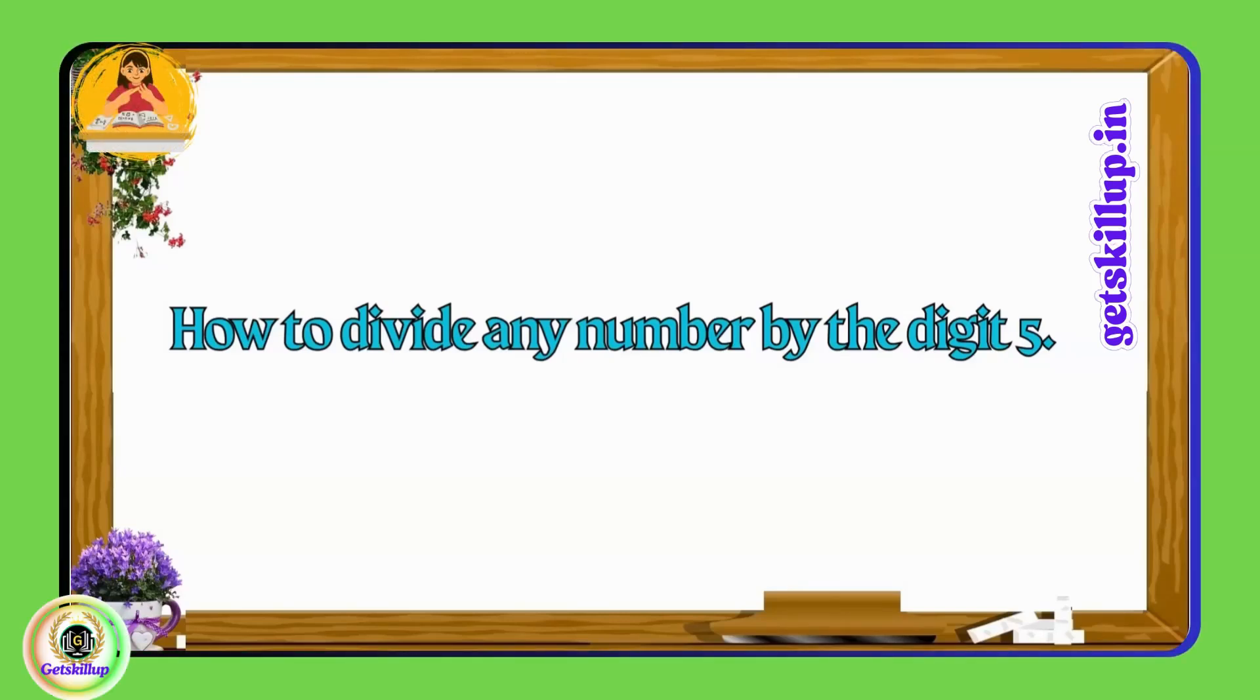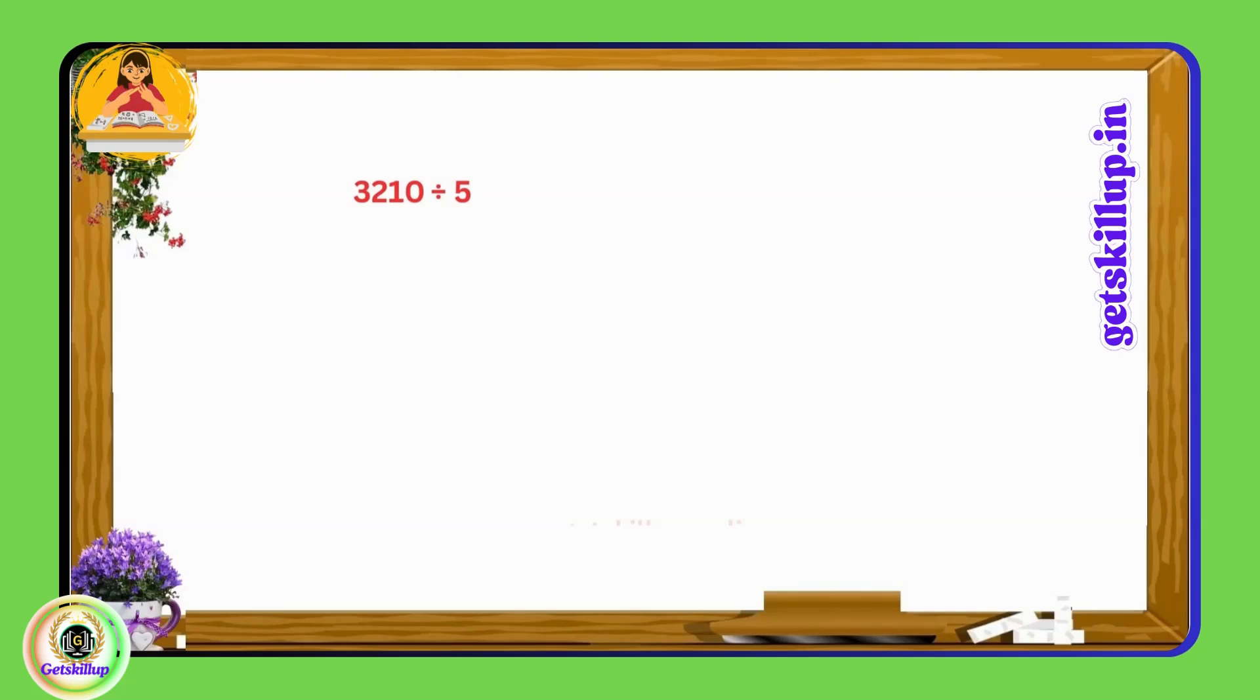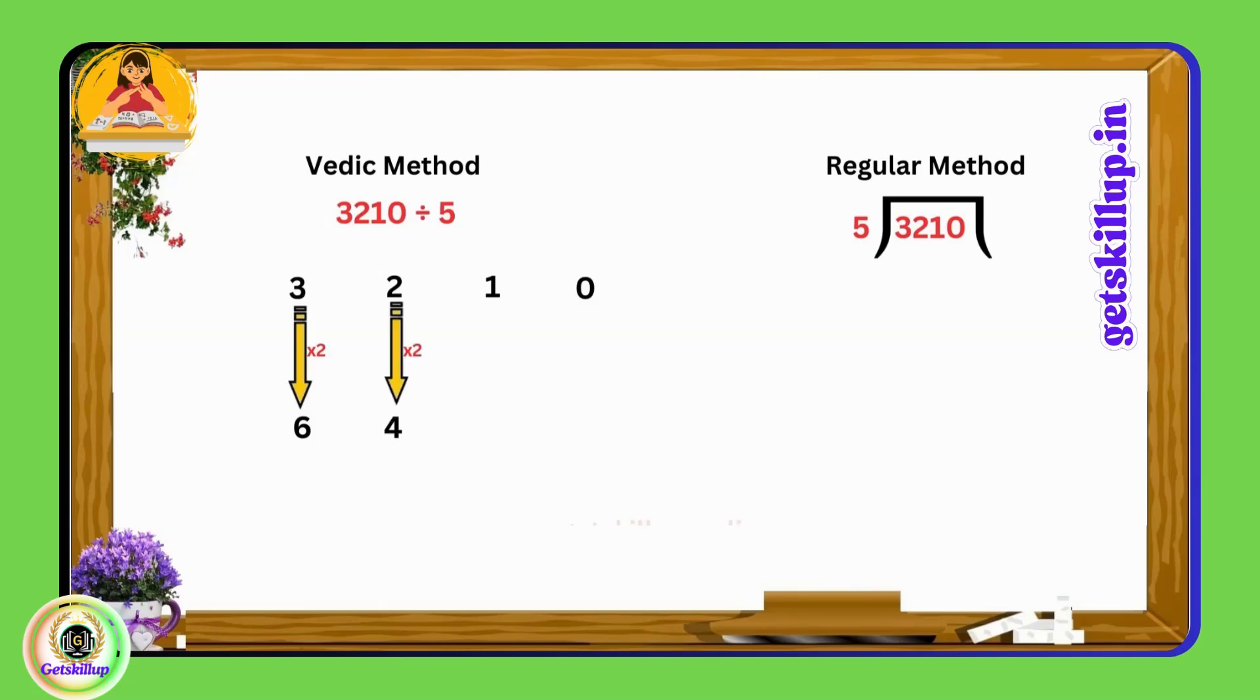In this video you learn how to divide any number by the digit 5. Let us take example of 3210 by 5. We start by doubling each digit: for the digit 3 we double it to get 6, for 2 we get 4 when doubled. Similarly, 1 becomes 2 and 0 becomes 0. Simply double the number and keep one digit place as remainder, then it becomes 642.0.